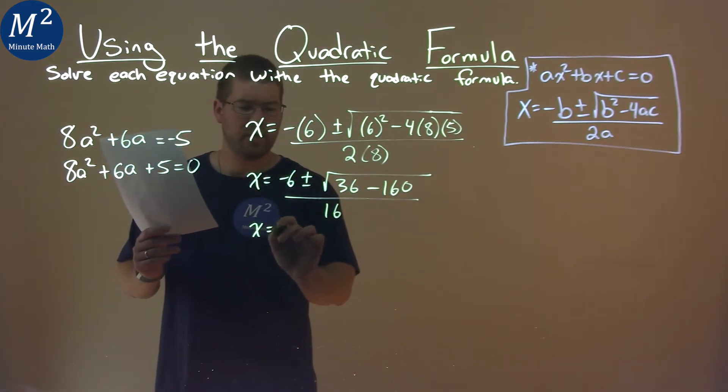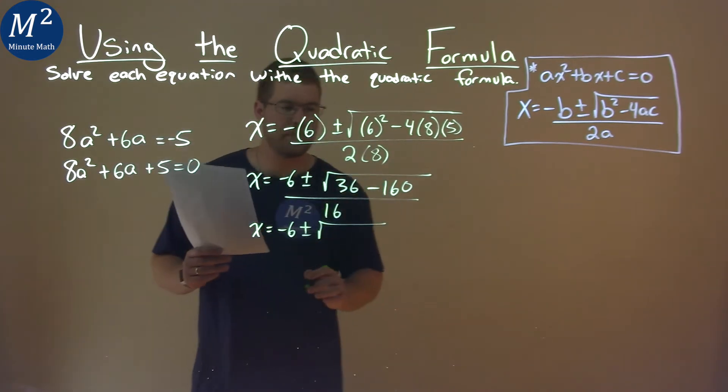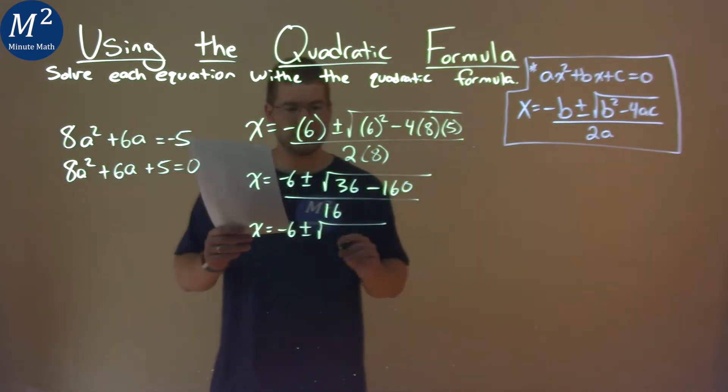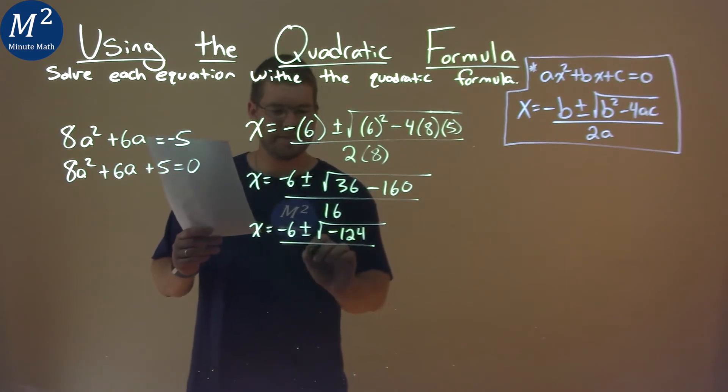Keep on going. x equals negative 6 plus or minus, and inside the square root, 36 minus 160 is negative 124, all over 16.